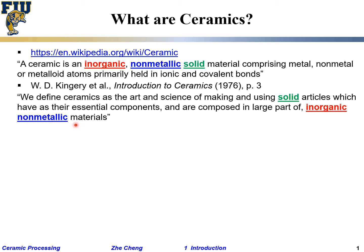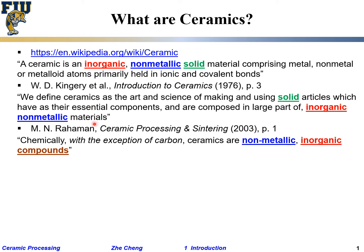According to Kingery, ceramics are composed in large part of inorganic, non-metallic materials. What are organic materials? Typical polymers, typical hydrocarbons — those contain a lot of carbon and hydrogen. Ceramics don't deal with those. Ceramics also don't deal with metallic materials — things that are shiny, highly electrically and thermally conducting, and malleable.